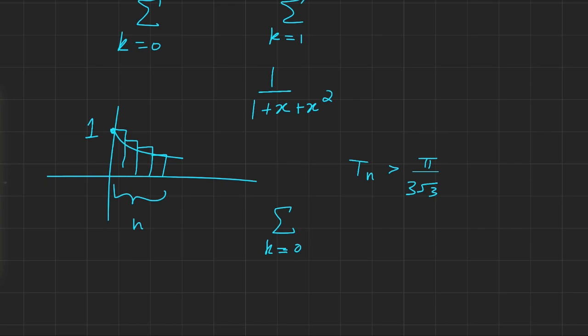If I did start from k equals 1, that would mean I'd be making these boxes and starting like this. So, clearly that's smaller than the actual area itself. This is an under approximation, so we know that S of n is less than π over 3 root 3.